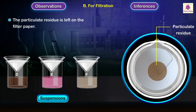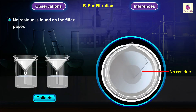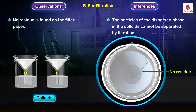Residue is found on the filter paper when the solutions of mixtures D, E and F are passed through it. The larger insoluble suspended particles can be separated from the suspensions by filtration. No residue is found on the filter paper when the colloids of mixtures G and H are passed through it. The particles of dispersed phase in the colloids cannot be separated by filtration.